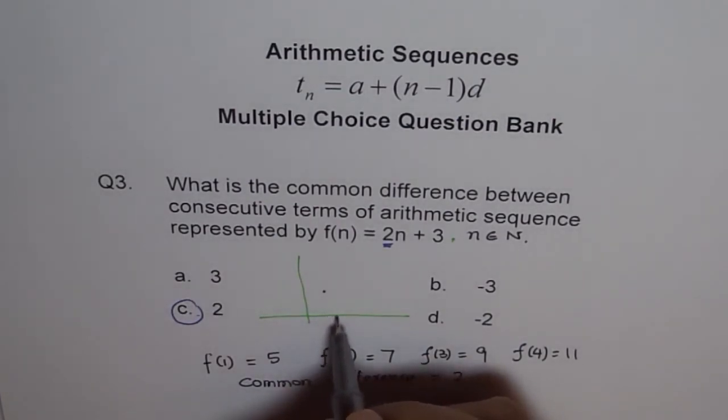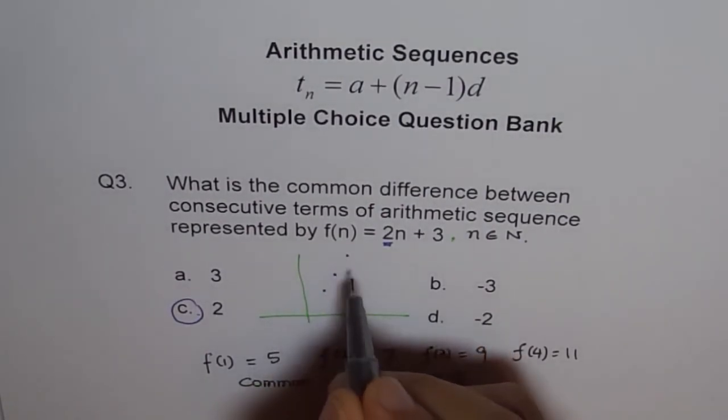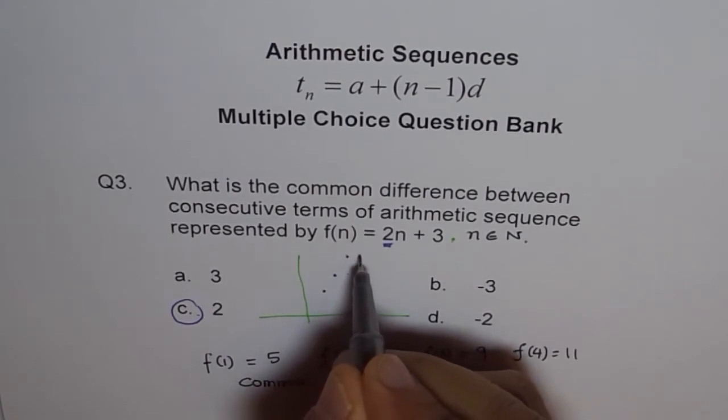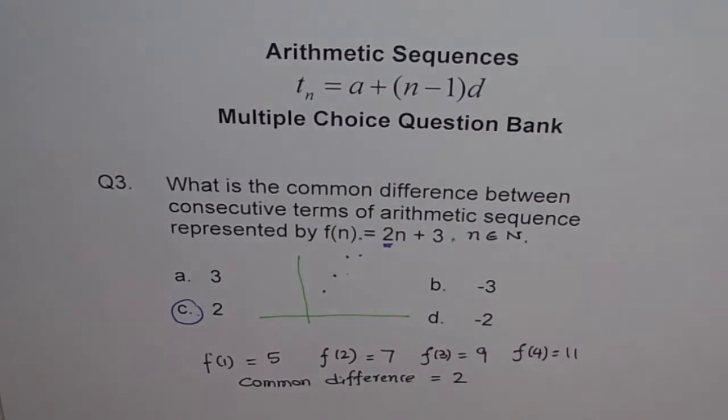So whenever you move 1 unit here, we move 2 units up, right? Do you see? 1 unit right, 2 units up. 1 right, 2 up. Because 2 is the slope. Do you see that? Rise over run.